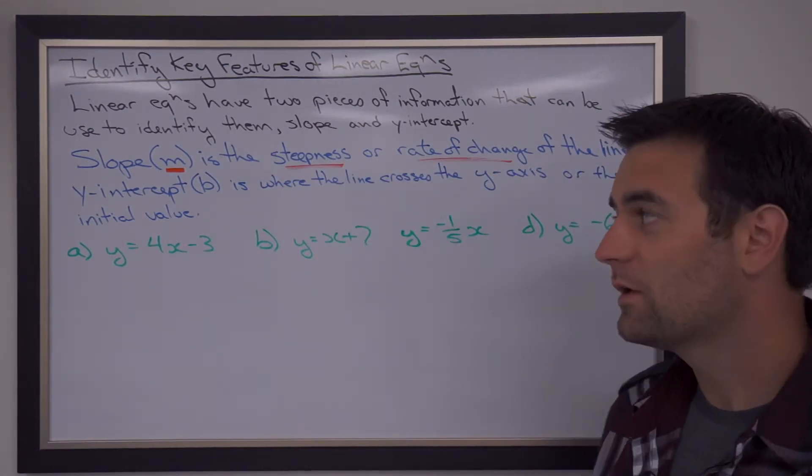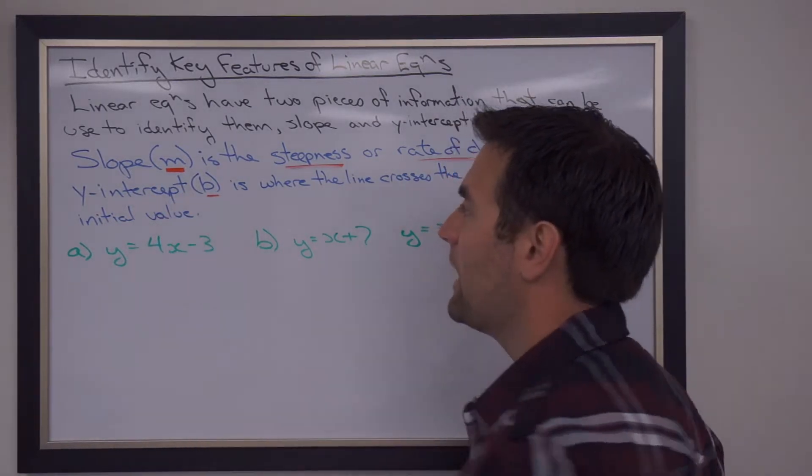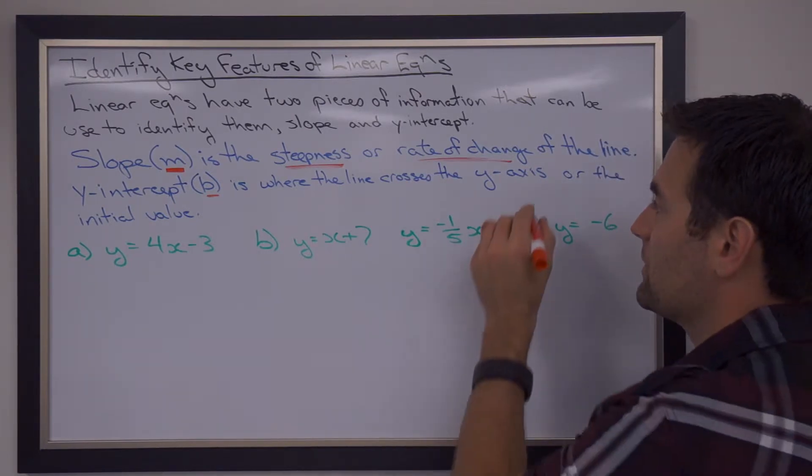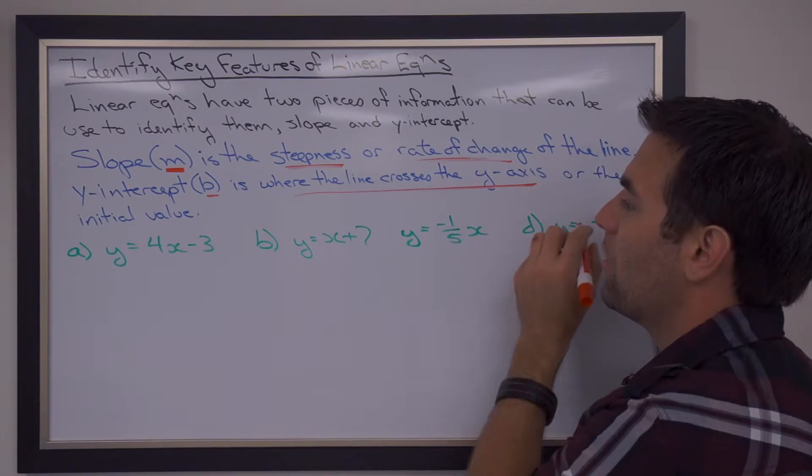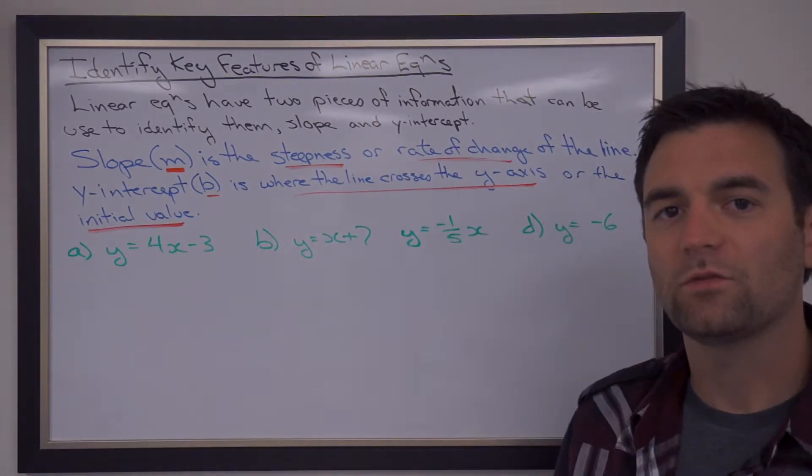The y-intercept is represented by the letter B, and it's where the line crosses the y-axis on the graph. So it's where the line crosses the y-axis, or it's the initial value. It's that starting value we often refer to.